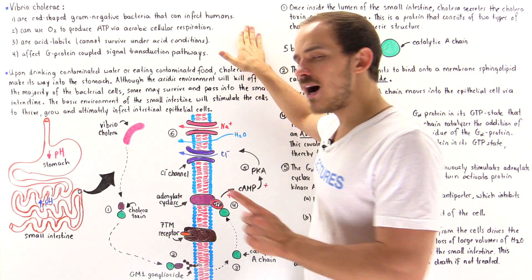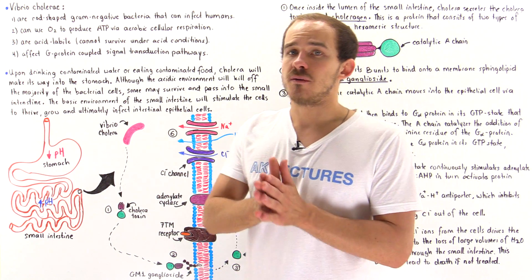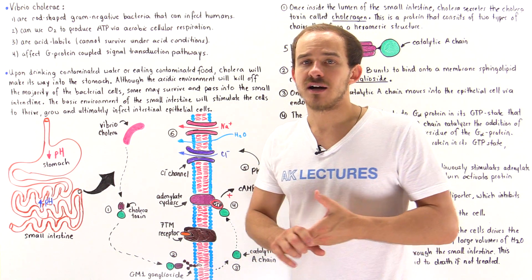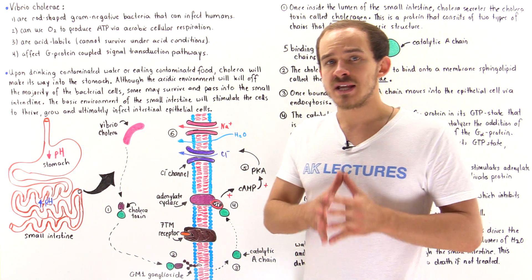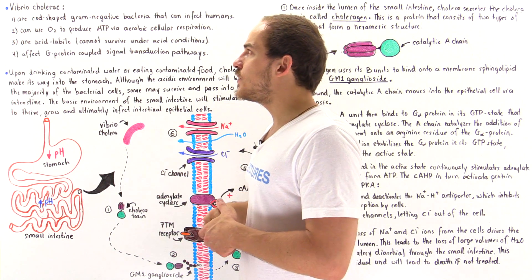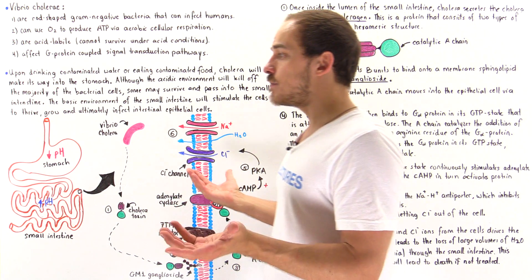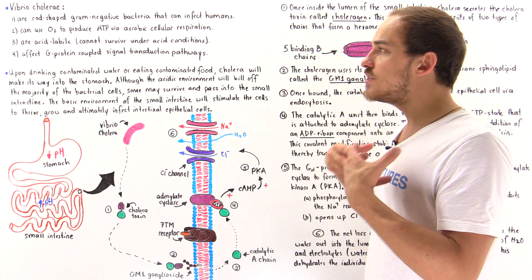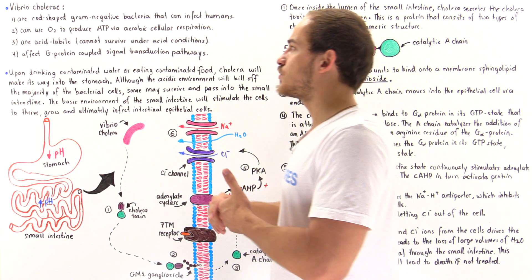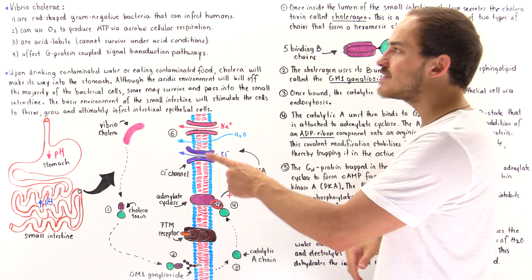In the presence of oxygen, Vibrio cholerae will use oxygen to produce ATP molecules in a process we call aerobic cellular respiration. In the absence of oxygen, they will switch to fermentation to produce those ATP molecules. Vibrio cholerae can only survive and grow under basic conditions. If placed into an acidic environment where the pH is low, they will not be able to grow and will eventually die. This means these Vibrio cholerae are in fact acid labile.